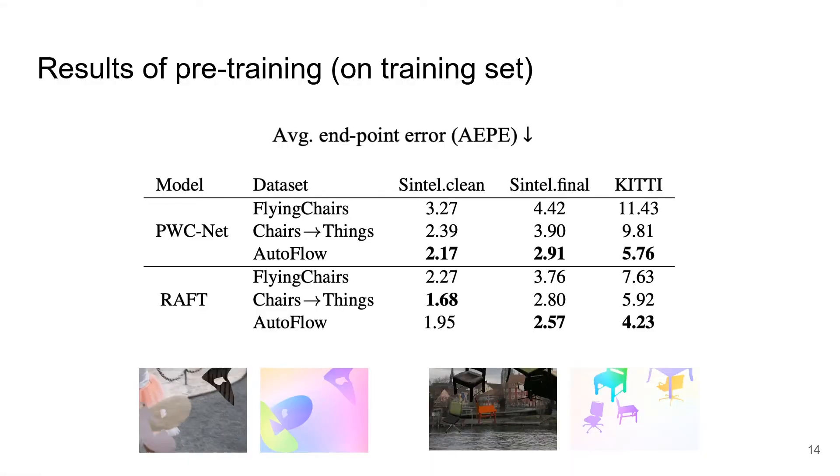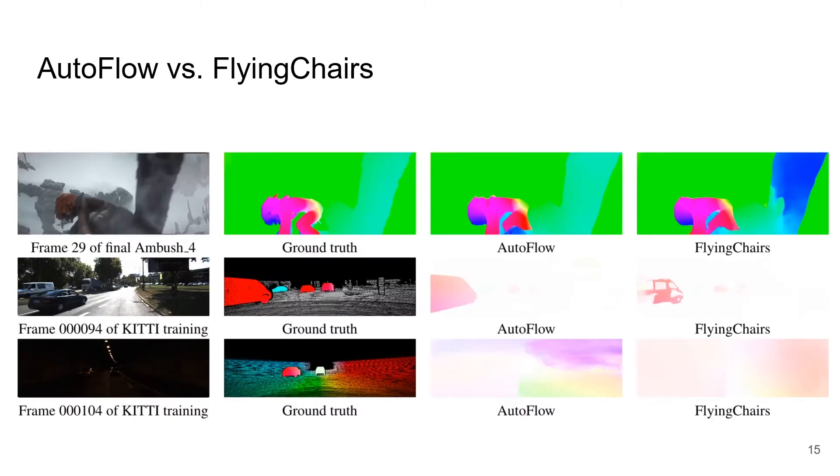We compare AutoFlow with flying chairs pre-training Raft and PWCnet from scratch. AutoFlow has significant improvements over flying chairs on Sintel and KITTI, and compares favorably against the flying chairs plus flying things 3D schedule. For these examples, Raft trained using AutoFlow can better recover blurry objects with large motion. There are still examples that are too difficult for Raft trained using either dataset.